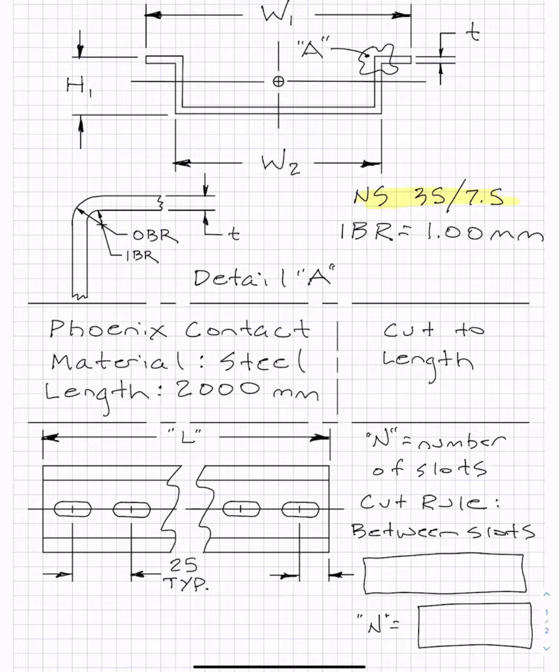And based on the datasheet, you'll see that it's got an inside bend radius of one millimeter. So here's the inside bend radius here. And you'll use the inside bend radius and the material thickness that will be on the datasheet to compute what the outside bend radius is.